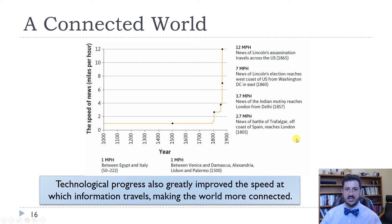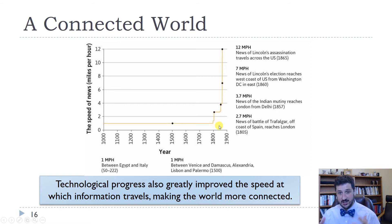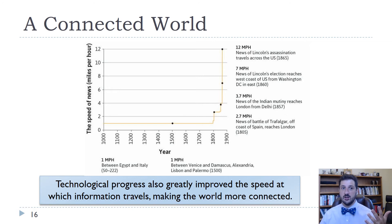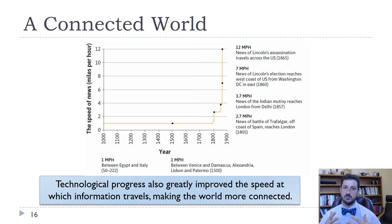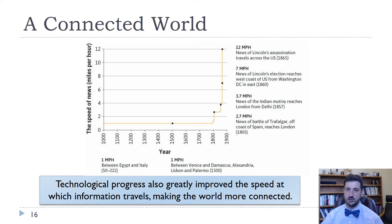There are some examples here between Egypt and Italy, and between Venice and Damascus. As we get better technology, we get faster ships, we get trains, we get the telegraph, we get the telephone. And then of course, with the internet, now news can travel at the speed of light. That's another example of how fast technology progressed, and the big difference between the flat world we had in the previous thousand years and the very non-flat world that we've had in the last two to three hundred years.